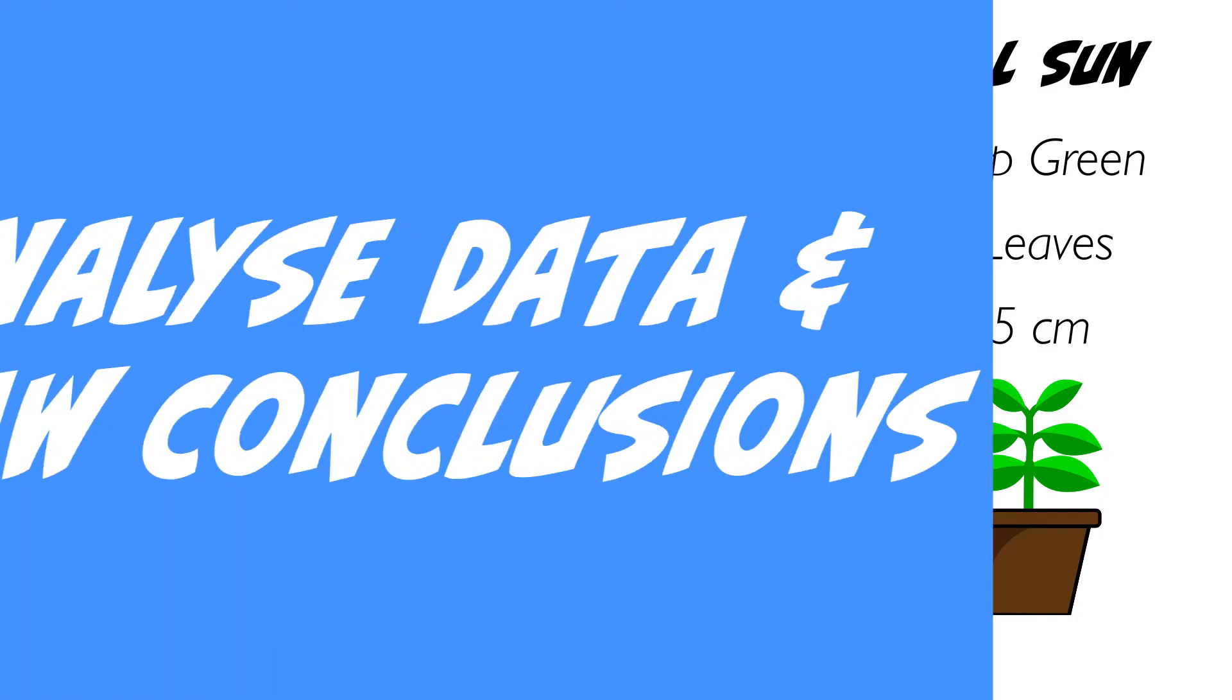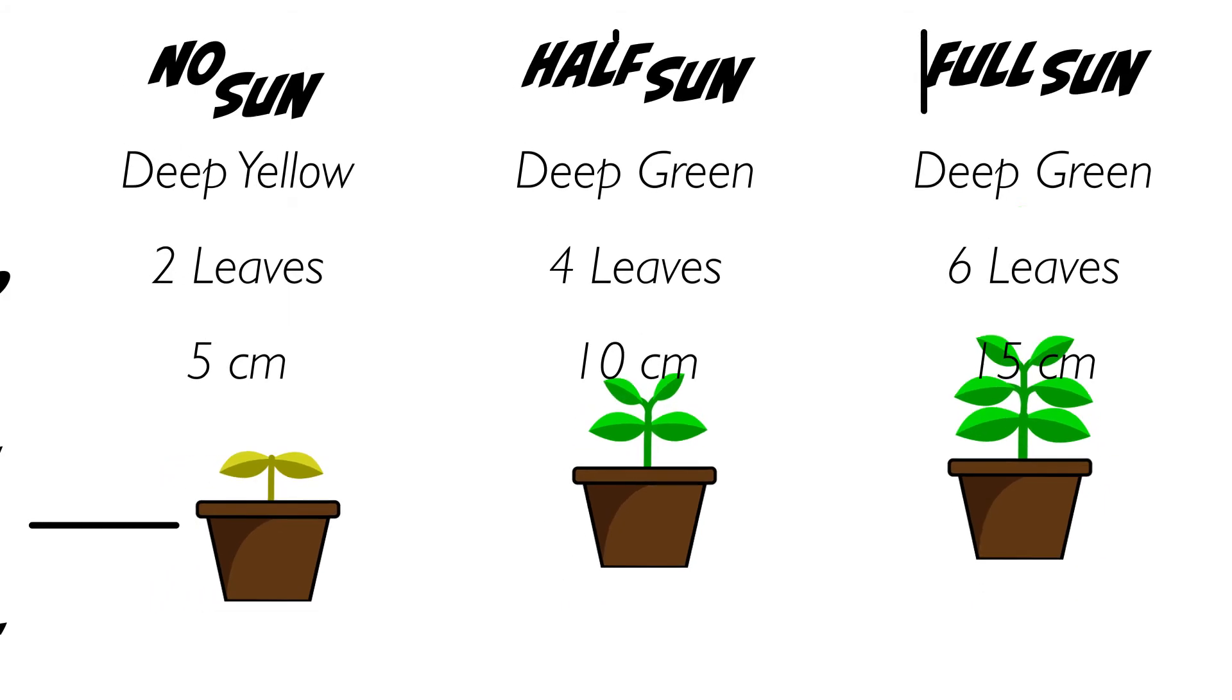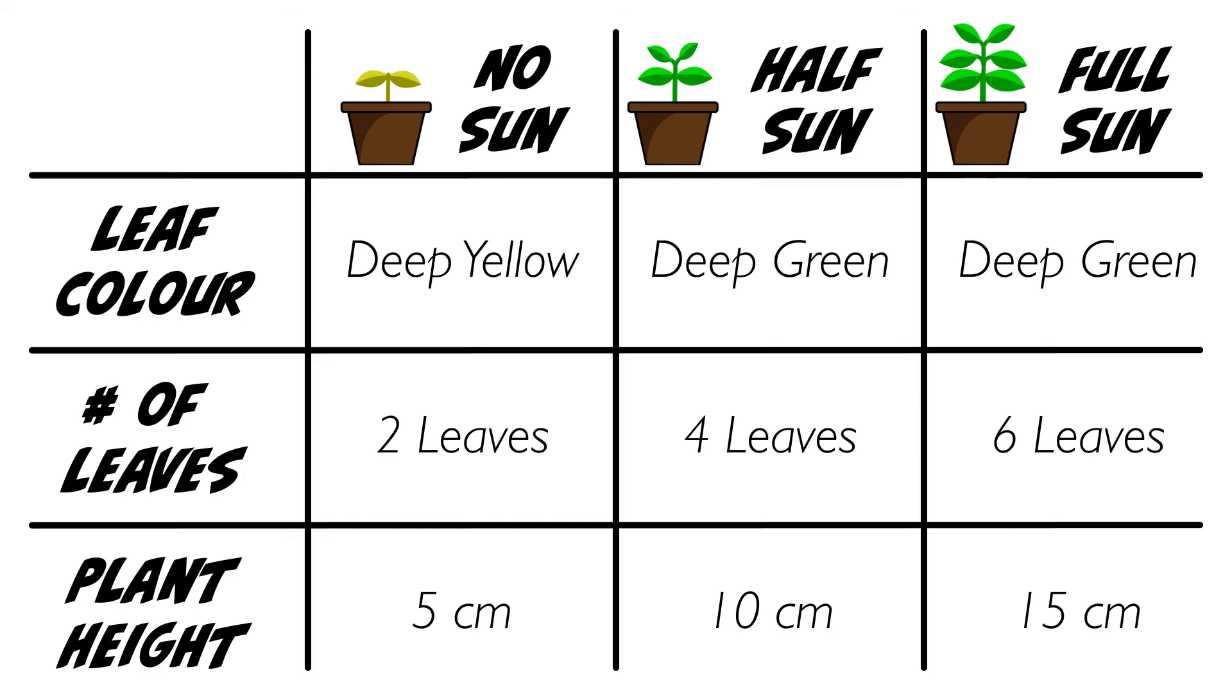It's time to analyze data and draw conclusions. In order to analyze it, let's put our data into a nice little table. The independent variable will be along the top, and each of the dependent variables will be along the left side. Now comes the moment of truth.